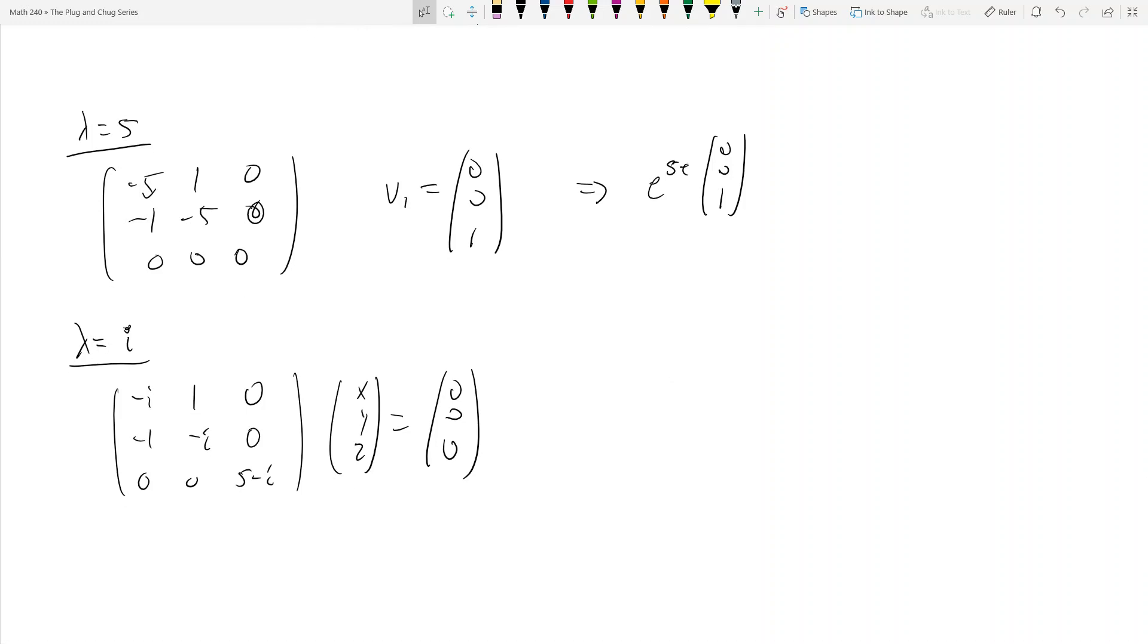So what I'm going to do then is I'm going to look at the first row. I'm going to take this first row and I'm going to multiply it. So I get negative ix plus y is equal to 0, right? So I took this first row and multiplied it by that matrix, by the column vector.